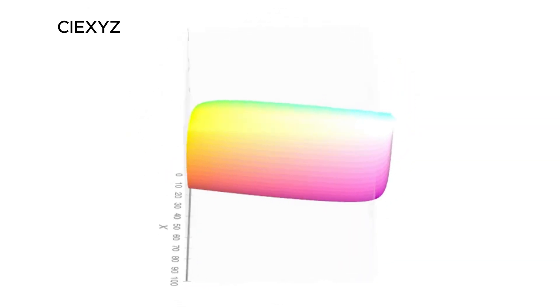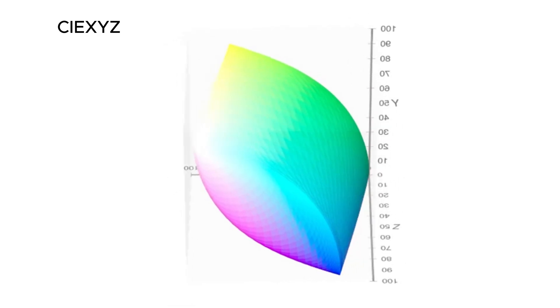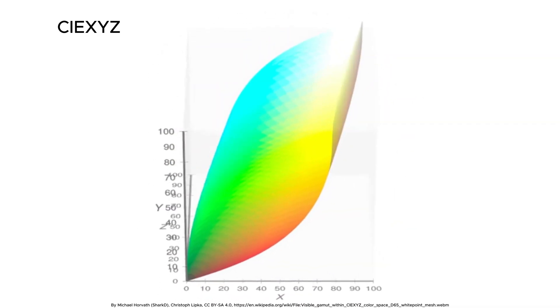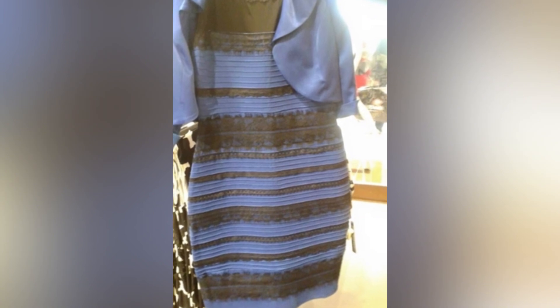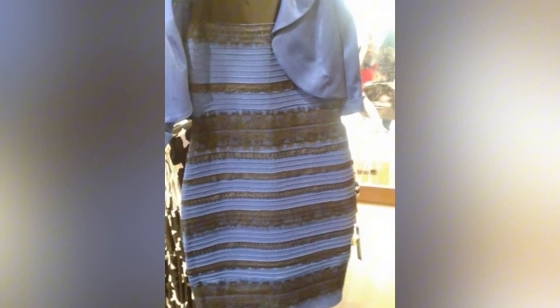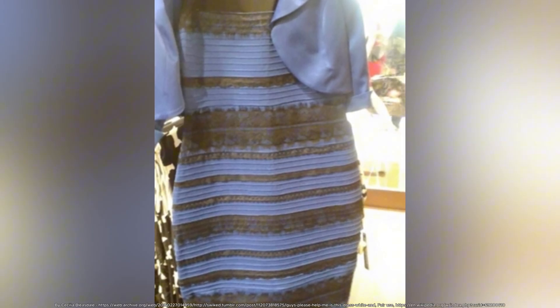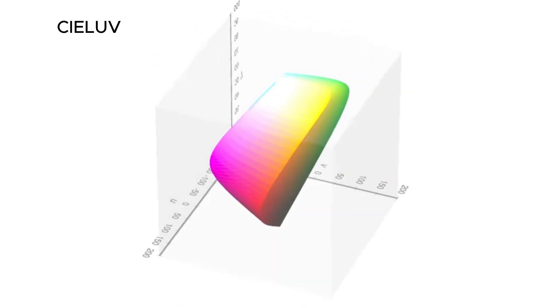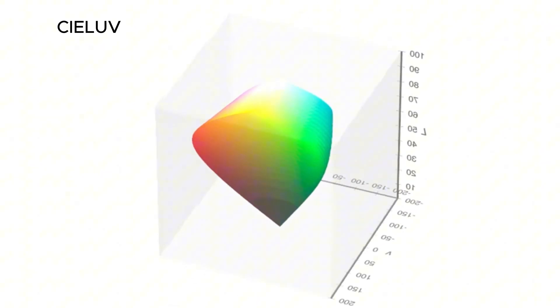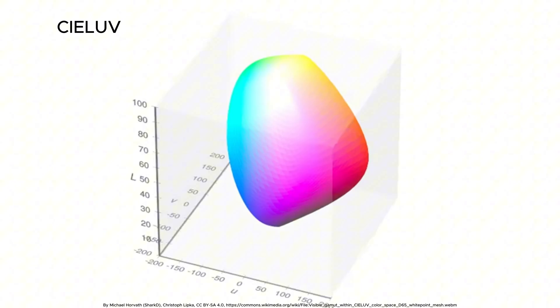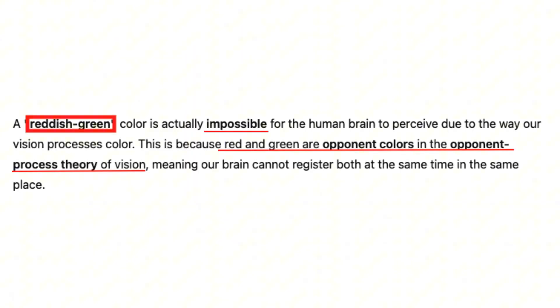The constructed nature of color becomes evident in visual illusions like the dress controversy, where identical wavelengths appeared as different colors to different people. Some colors, like magenta, don't even exist as single wavelengths but are purely neural constructs. Others, like reddish green, are forbidden by our neural wiring.